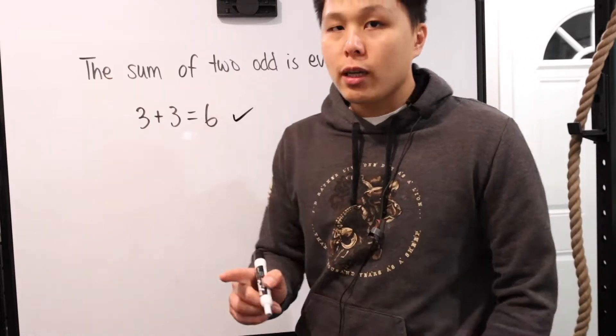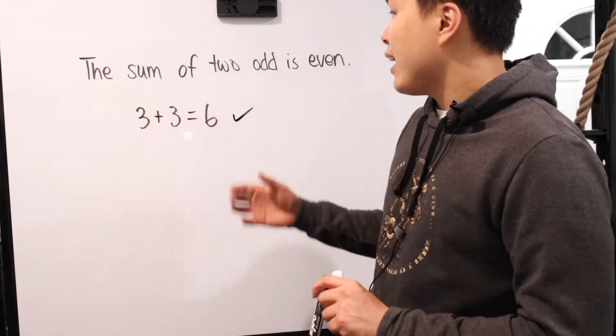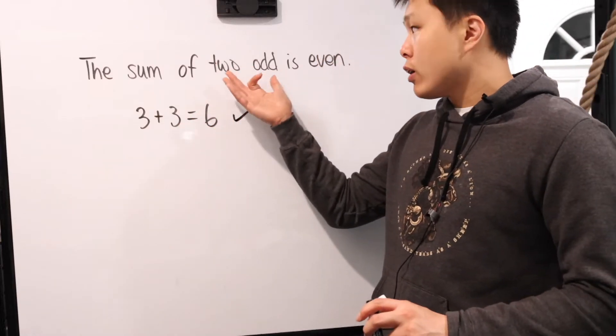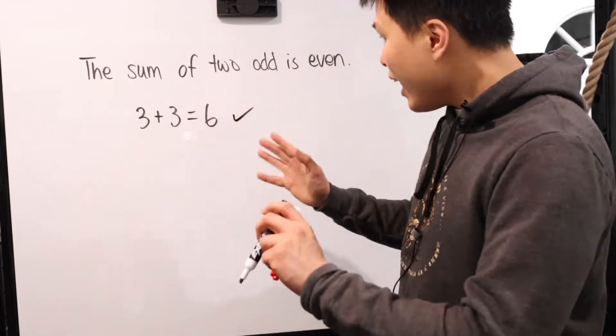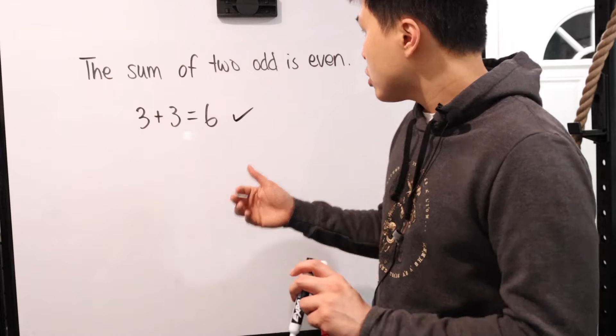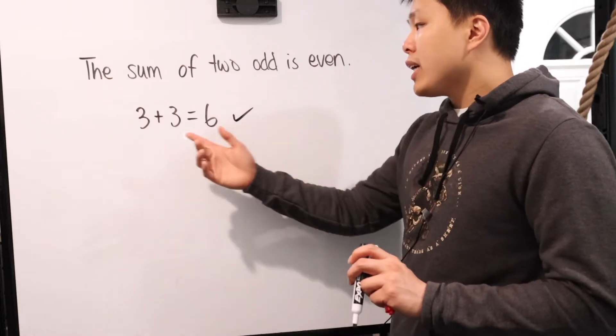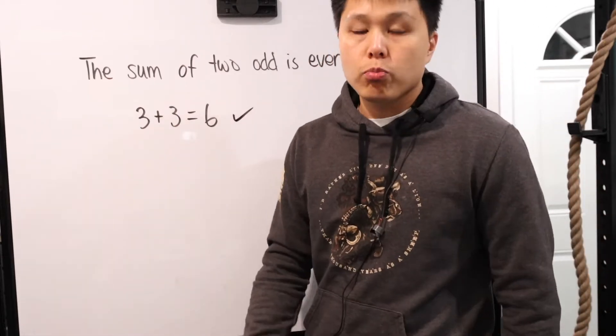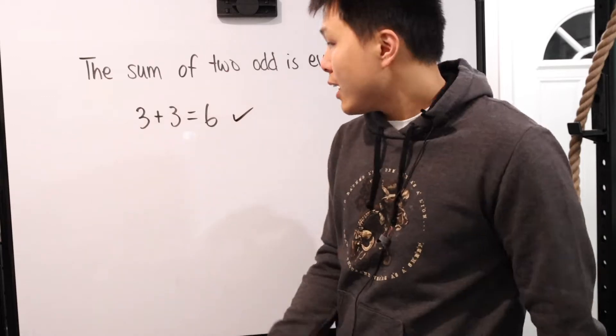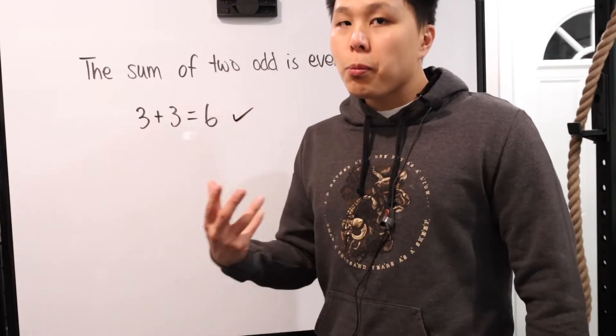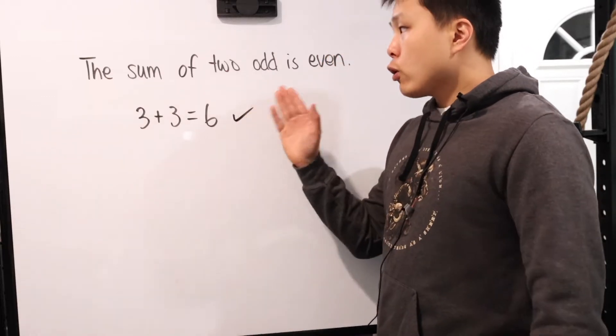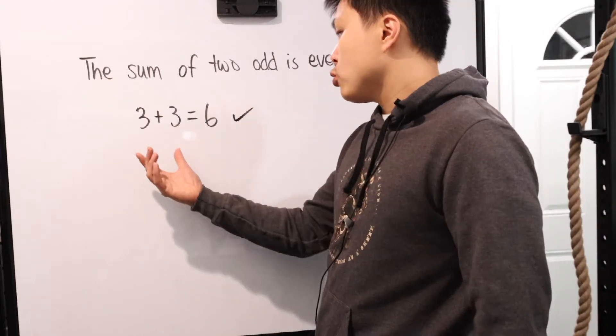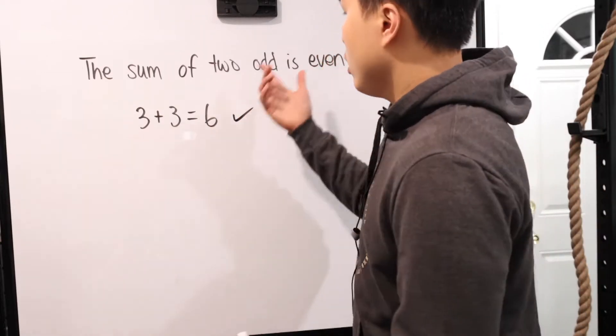Because guess what? To prove a general statement is true is to say that for any combinations such that whatever it is, in this case two odd numbers, any combination of two odd numbers added together is even. You can't just say, well, this was true. Yeah, for three and three. But what about three and five? Well, if you test that, that is true, but you got to keep on testing. So for statements that are true, you have to prove it. You can't provide an example showing that it's true and you're done.